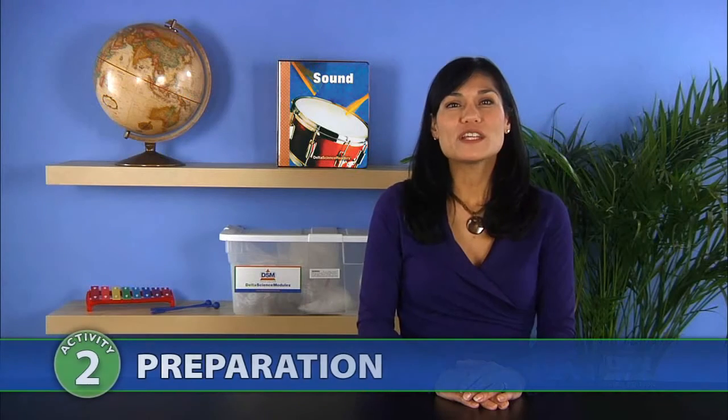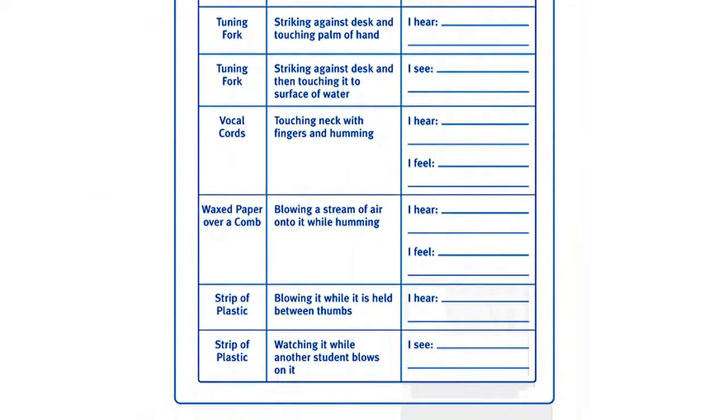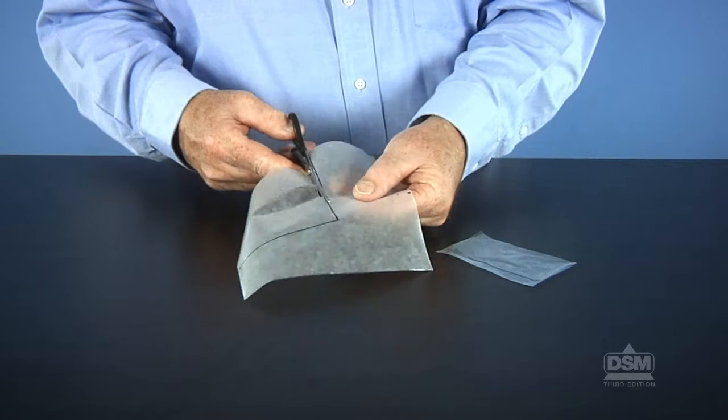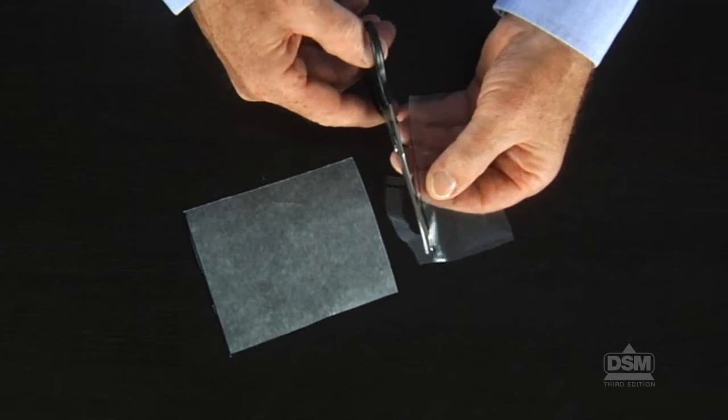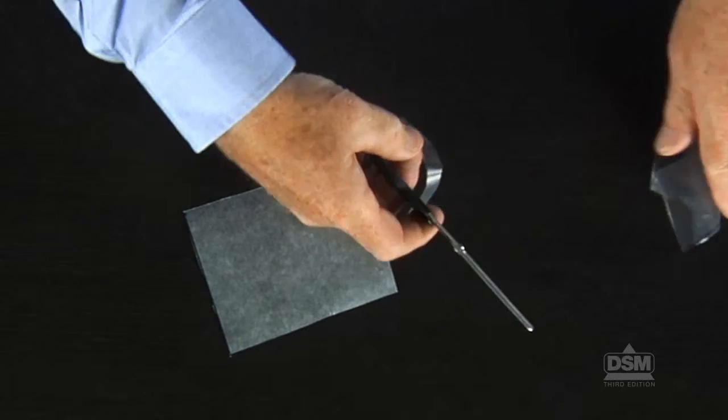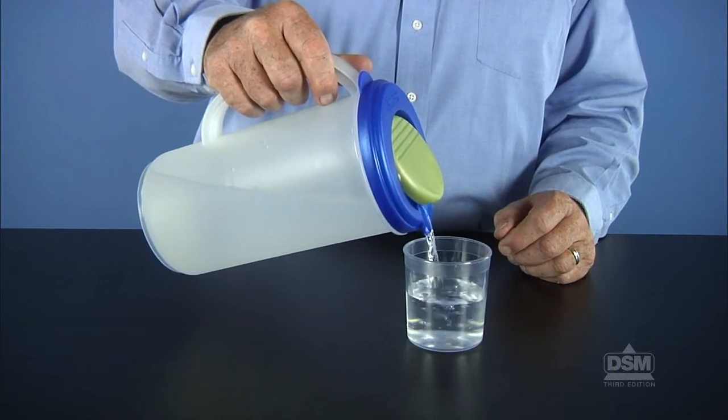To prepare for the activity, make a copy of Activity Sheet 2 for each student. Cut a piece of waxed paper 8 to 12 centimeters and a piece of plastic 1.25 to 10 centimeters for each student. Then fill each plastic tumbler three-quarters full of water.